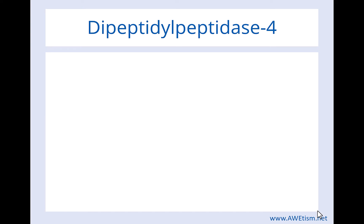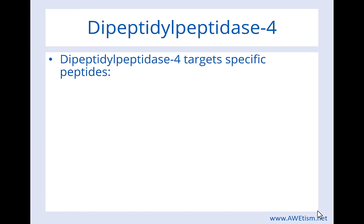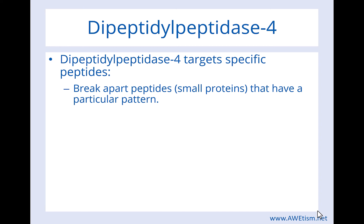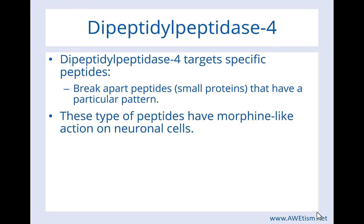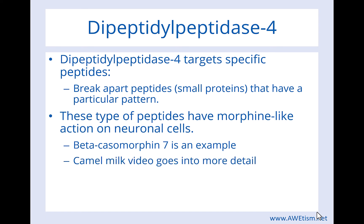Let's get to dipeptidyl peptidase 4, also abbreviated DPP4. DPP4 targets specific peptides — it is a very specific digestive enzyme. DPP4 breaks apart peptides, which are small proteins that have a particular pattern. These peptides have morphine-like action on neuronal cells. Beta casein morphine 7 is an example of this very specific peptide that DPP4 can specifically break apart. Only DPP4 can actually break down this specific peptide in the gut. There's another link below about a video on camel milk and the science behind why people spend extra money to buy it, which gets into beta casein morphine 7 further.